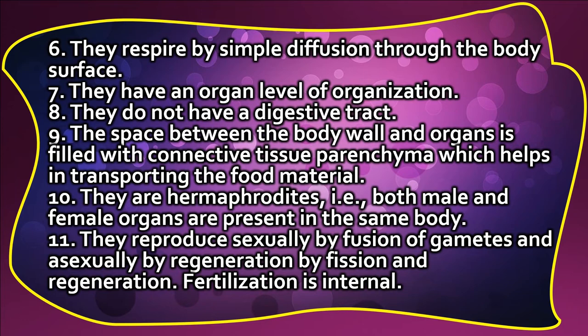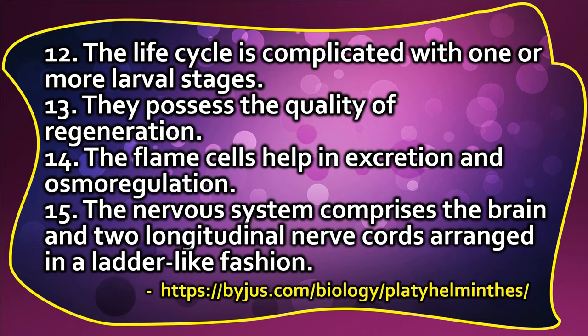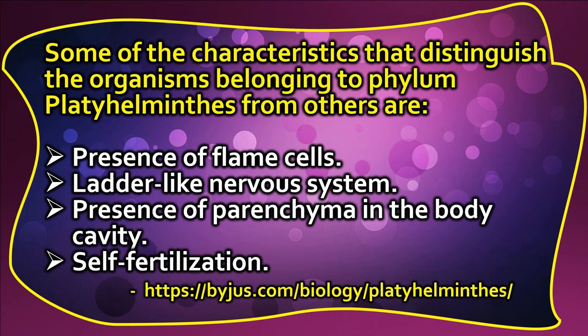10. They are hermaphrodites — both male and female organs are present in the same body. 11. They reproduce sexually by fusion of gametes and asexually by fission and regeneration; fertilization is internal. 12. The life cycle is complicated with one or more larval stages. 13. They possess the quality of regeneration. 14. The flame cells help in excretion and osmoregulation. 15. The nervous system comprises the brain and two longitudinal nerve cords arranged in a ladder-like fashion. Distinguishing characteristics include: presence of flame cells, a ladder-like nervous system, presence of parenchyma in the body cavity, and self-fertilization.